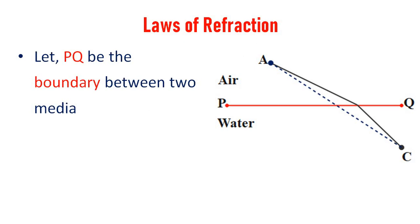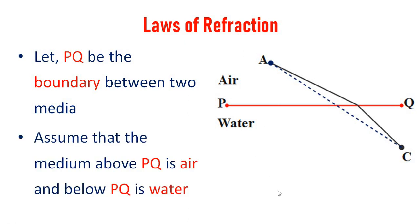Laws of refraction. Let PQ be the boundary between two media. Assume that the medium above PQ is air and the medium below PQ is water. The medium will be different in air and in water, and the velocity of light will be different in water.